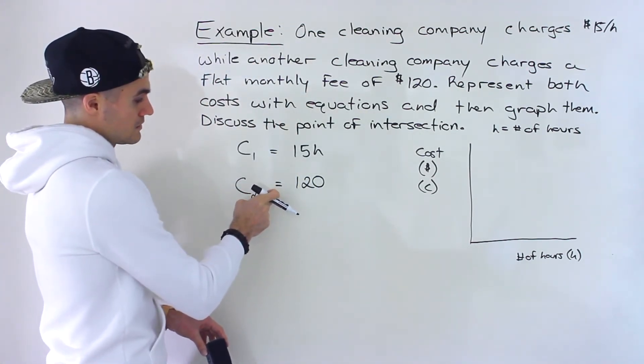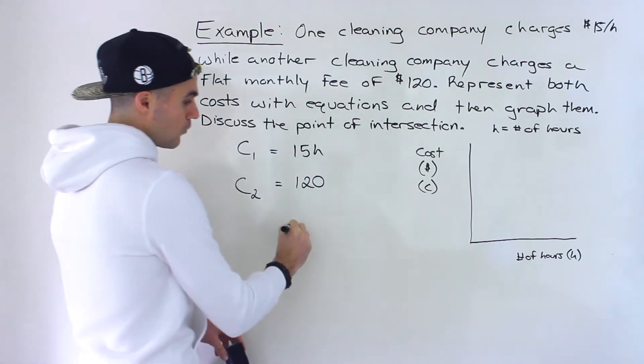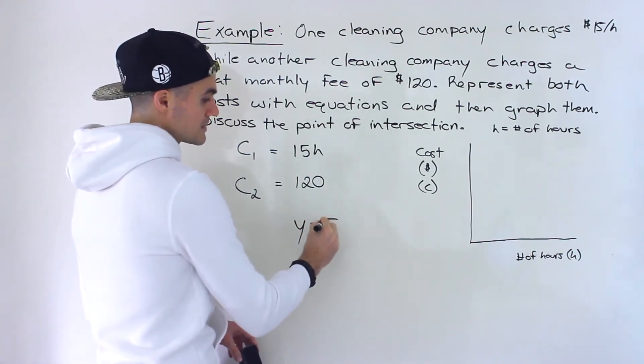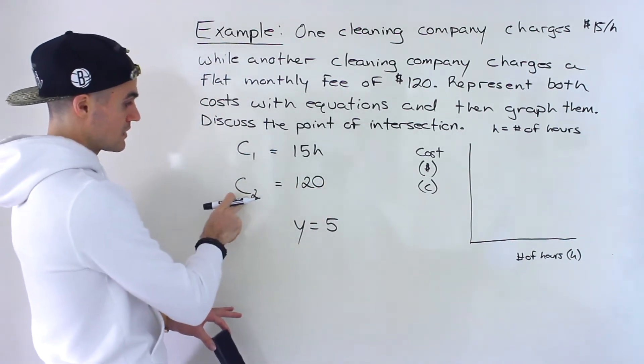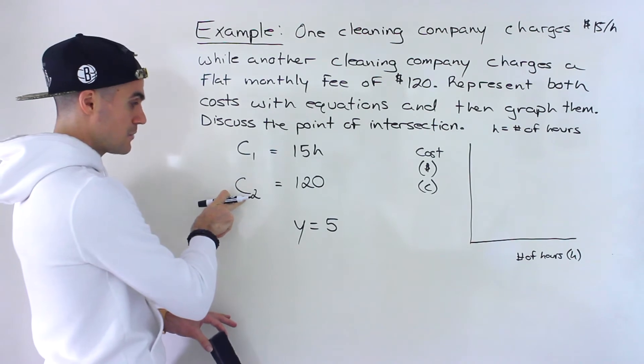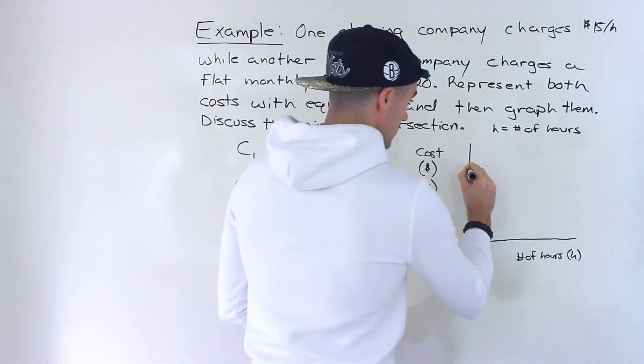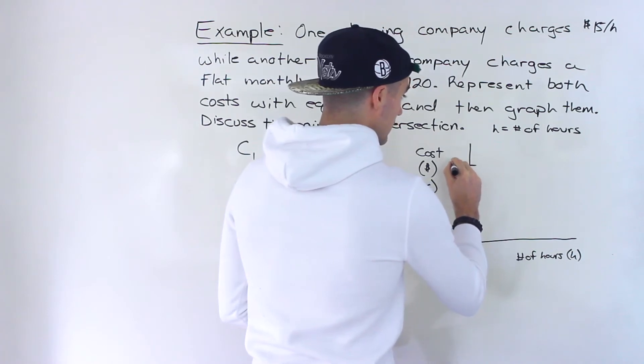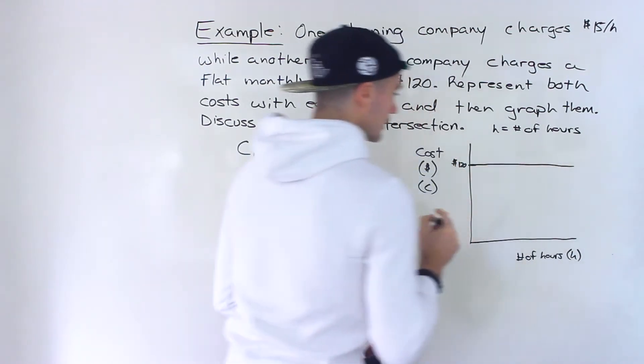Now, this one is easiest to graph because it's just going to be a horizontal line. Whenever you have y equals just a number, let's say y is equal to five, that's just a horizontal line. So same thing here, we have the dependent variable equaling a constant. It's just a horizontal line at a value of $120, like that.